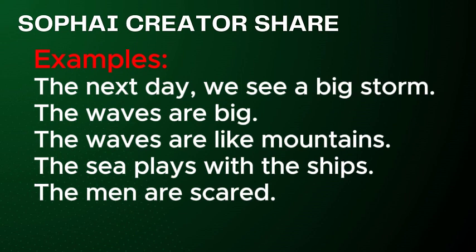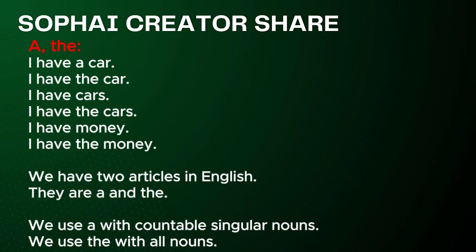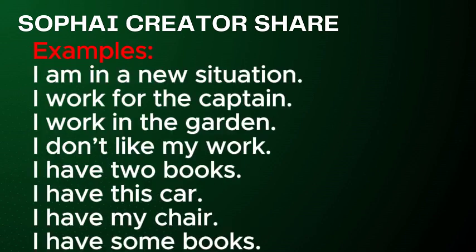Examples: The next day we see a big storm. The waves are big. The waves are like mountains. The sea plays with the ships. The men are scared. Articles: I have a car. I have the car. I have cars. I have the cars. I have money. We have two articles in English: a and the. We use 'a' with countable singular nouns. We use 'the' with all nouns. Examples: I am in a new situation. I work for the captain. I work in the garden. I don't like my work. I have two books. I have this car. I have my chair. I have some books.